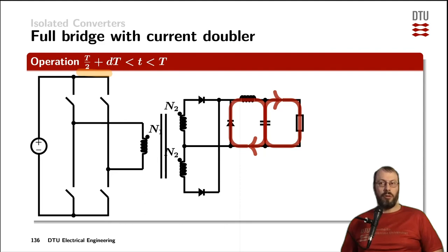Furthermore, after the on-time of that switch, it is followed by the off-time of all four switches, and we have the same freewheeling operation on the secondary side, or towards the output.